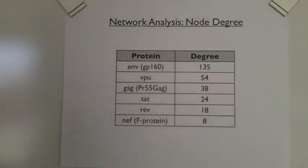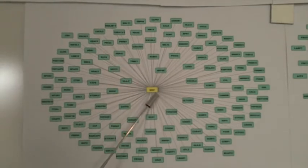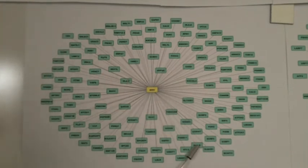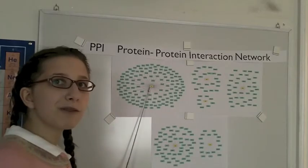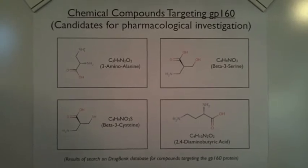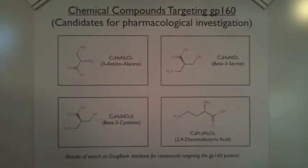Highly-connected hub proteins are more important to virus survival than a protein with a small number of interactions. The nodes of the highest degree are shown in this chart — ENV at 135! Let's look at the viral envelope protein GP160. It interacts with many human proteins, including CD4, which is the primary receptor protein, and HLAB, which presents foreign antigens to the immune system. So large hub proteins may be good targets to obstruct virus function. I searched the drug bank database and found four experimental compounds that target the GP160 protein.